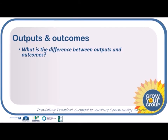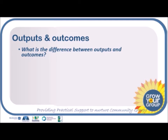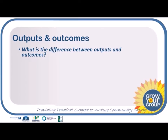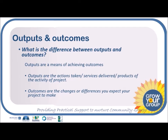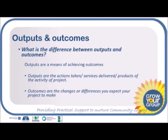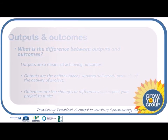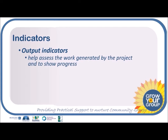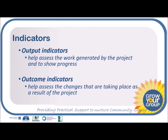Moving on to outputs and outcomes — sometimes it's difficult to understand the difference between the two. We introduced some planning models in the first session and these are useful tools in helping to identify these. Outputs are a means of achieving outcomes; they are the actions taken, services delivered, or products of the activity of the project. Outcomes are the changes or differences you expect your project to make. Output indicators help assess the work generated by the project and show progress, while outcome indicators help assess the changes taking place as a result of the project.